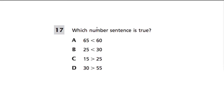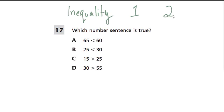Here's a question about something called inequalities. An inequality means that two things are not equal. So for example, the numbers 1 and 2 — they're different numbers. So how do we write a symbol that describes that? Well, I would write a symbol like this, which means that 2 is bigger than 1.